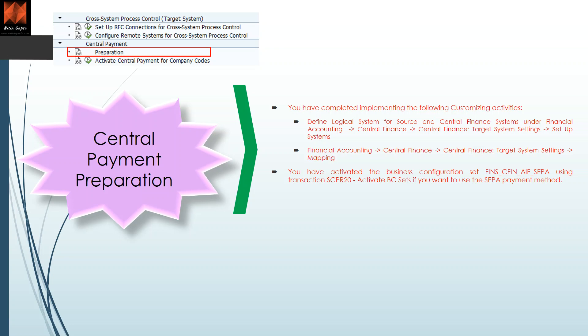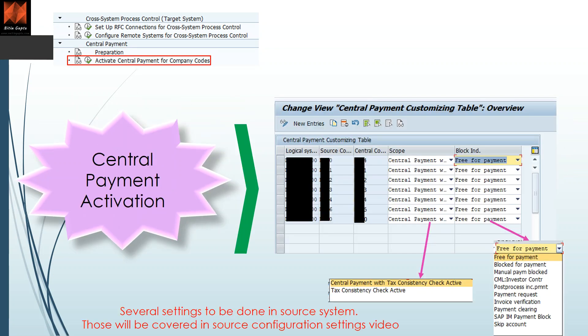The first step is preparation. Preparation means there are some additional setups to complete: the logical system is defined, central target system mappings are complete, and you have activated a business configuration set called FINS_CFIN_AIF_CEPA in transaction SCPR20. You have to activate this for CEPA, which stands for Single Euro Payment Area, mostly used in the European region.